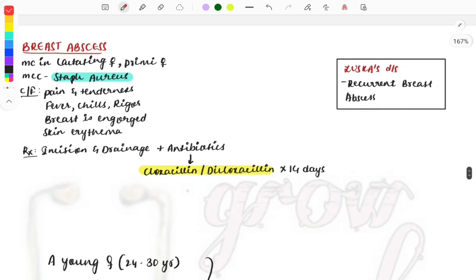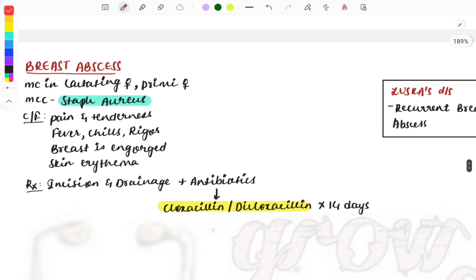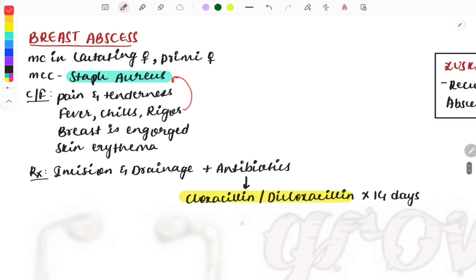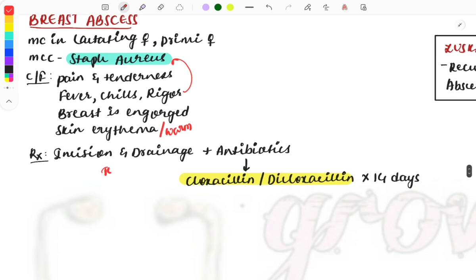Breast abscess is most commonly seen in lactating females, mostly primigravida. Most common cause is Staphylococcus aureus. Clinical features include pain and tenderness, fever, chills—typical of bacterial infection—breast engorgement, and skin erythema. The skin can be described as warm.